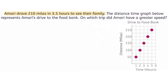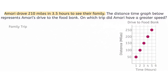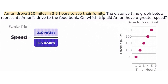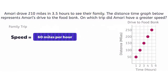Amari drove 210 miles in 3.5 hours to see their family. The distance-time graph below represents Amari's drive to the food bank. On which trip did Amari have a greater speed? Let's start by calculating the speed that Amari drove to see their family in miles per hour so that we can compare it more easily with the graph. The average speed is calculated by dividing the distance traveled by the time spent traveling. That means Amari drove at an average speed of 60 miles per hour.